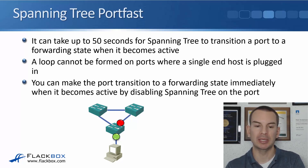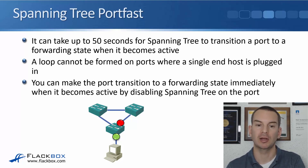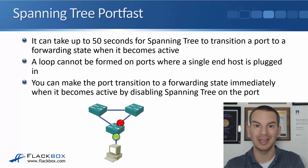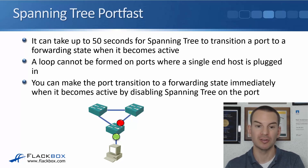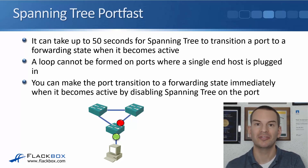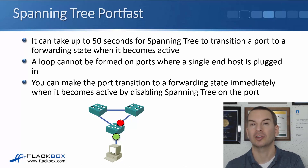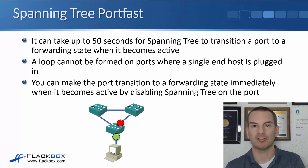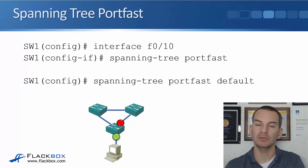As you can see in the diagram at the bottom, there is a potential loop between the three switches, so one of the ports was put into a blocking state. If you then plug a PC into one of the switches with a single network cable, it's impossible to have a loop through there. So it would be nice if you didn't have to wait 50 seconds for the port to come up — and you can configure that, making the port transition to a forwarding state immediately when it becomes active by disabling spanning tree on the port.